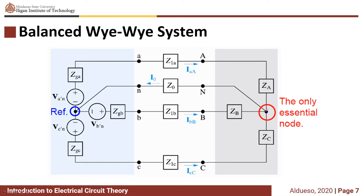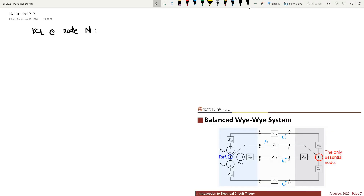We have one essential node and a reference node. Let's label this essential node as node N, and the reference node will be at ground. Applying KCL at node N, the essential node, we have VNN over Z0 plus terms for each line.